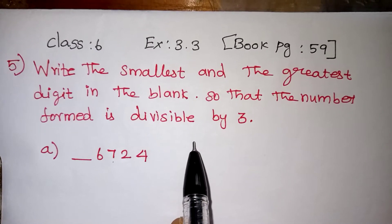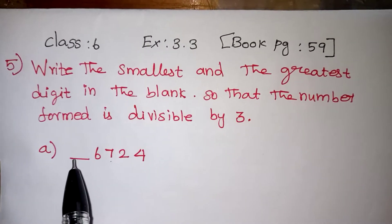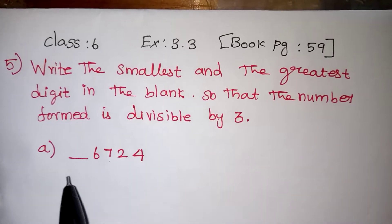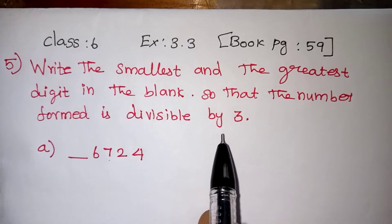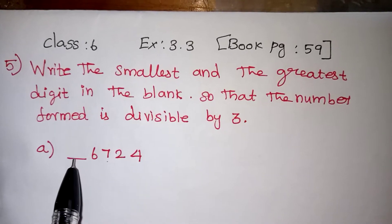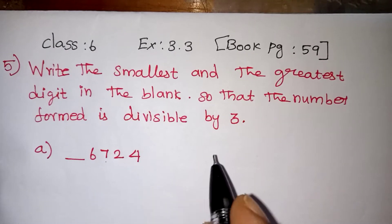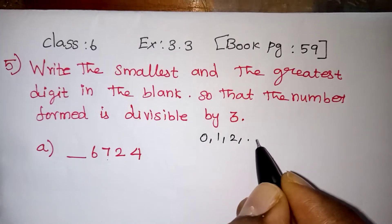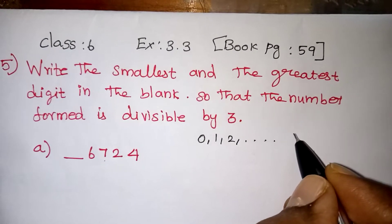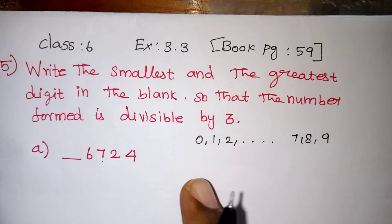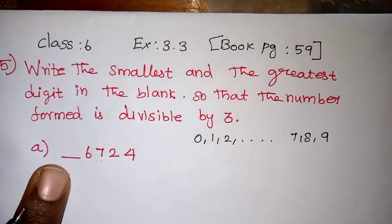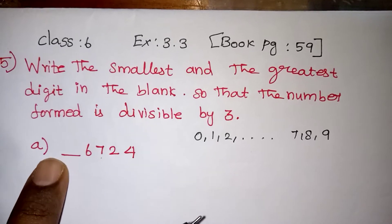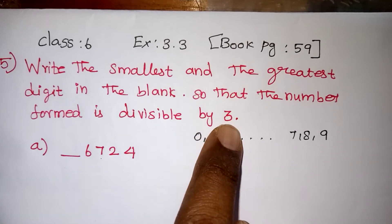So we need to find two numbers: the smallest number which can be filled in this place, and the greatest number that can be filled in this place, so that the number formed should come in the 3 table. So all the possible numbers that can be filled here — we can start from 0 and fill up to 9. Only these 10 digits are possible to fill in this blank, because only 1 digit we can fill in this place. So the whole number should come in the 3 table.